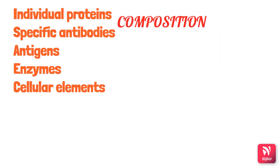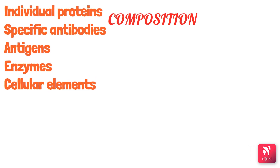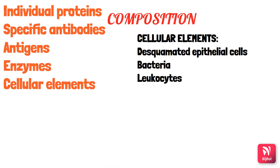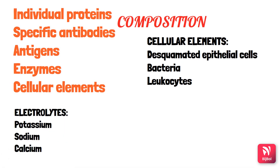The composition of GCF includes individual proteins, specific antibodies and antigens, enzymes, and cellular elements. Cellular elements include desquamated epithelial cells, bacteria, and leukocytes. Electrolytes include potassium, sodium, and calcium. Importantly, high calcium and sodium concentrations correlate positively with inflammation, and the sodium-to-potassium ratio also correlates with inflammation — which is why measuring GCF components helps in detection and prediction of periodontal disease.